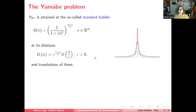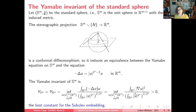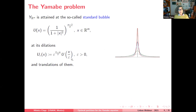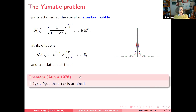The problem with Yamabe's proof was that when minimizing the quotient, a minimizing sequence may not converge — one can have blow-up as epsilon goes to zero. A condition preventing blow-up was furnished by Aubin: if the Yamabe invariant of M is strictly smaller than the Yamabe invariant of the standard sphere, then the Yamabe invariant of M is attained and the Yamabe problem has a solution.